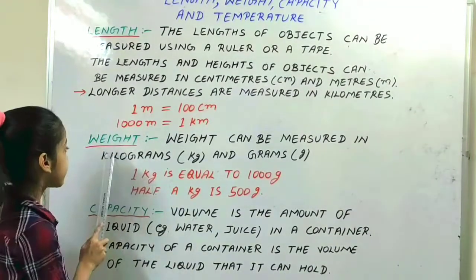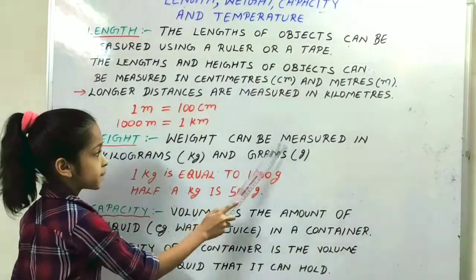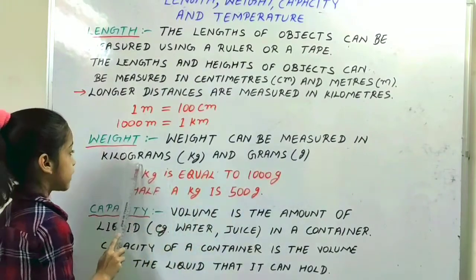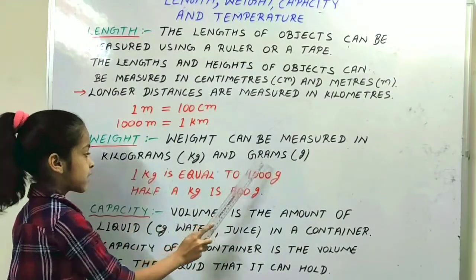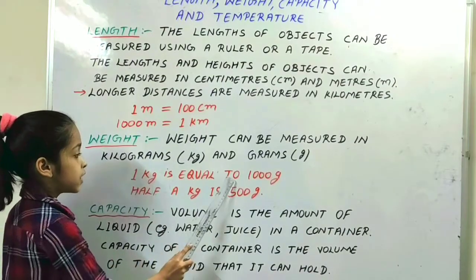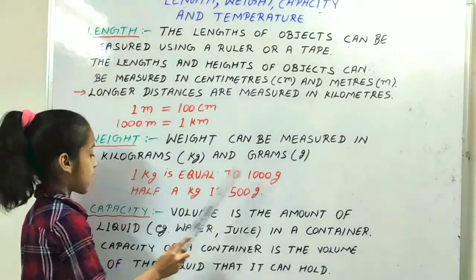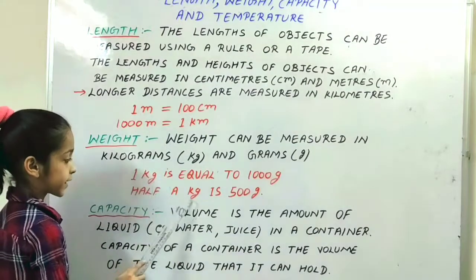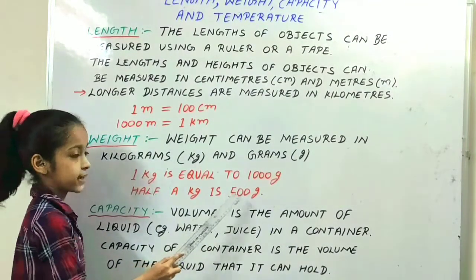Next is weight. Weight can be measured in kilograms and grams. So here, 1 kilogram is equal to 1000 grams and half a kilogram is equal to 500 grams.